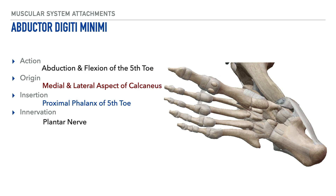Next is the abductor digiti minimi. As the name implies, its actions include abduction, but it also allows flexion of the fifth toe. Its origin is on the medial and lateral aspect of the calcaneus. The insertion is on the proximal phalanx of the fifth toe. The innervation of this muscle is the plantar nerve.